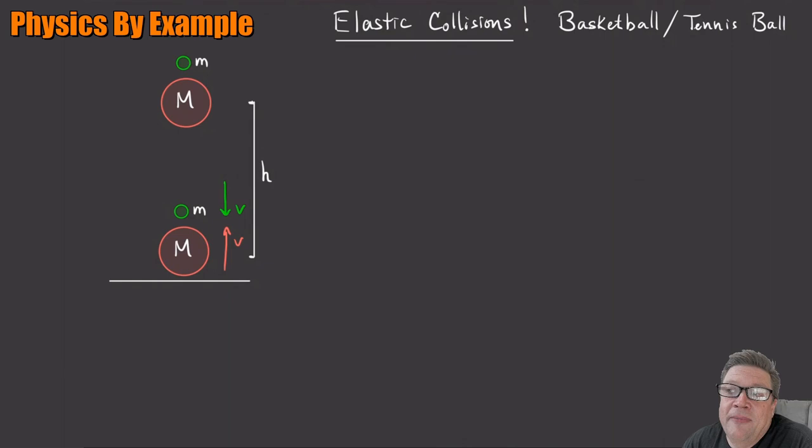So how are we going to treat this? We're going to use the trick that we've already used before, which is transforming into the frame where, in this case, the little ball, the tennis ball, is at rest. So how are we going to do that? The little ball at rest, what we're going to do is we're going to add a speed V going up, right? Because that'll cancel the speed going down. That'll give the little ball speed zero.